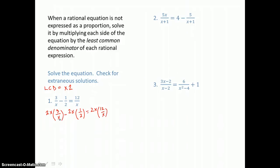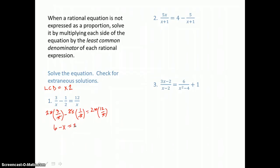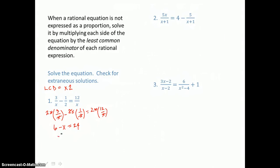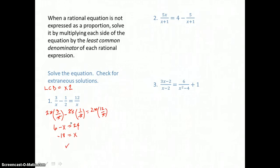Simplifying each term: I can cancel that factor of x top and bottom in the first term, so I'm left with 6. Then I can cancel the factor of 2 in the second term, leaving minus x. On the right, I cancel the factor of x top and bottom, leaving 24. Subtracting 24 from both sides and adding x to both sides, x equals negative 18. Checking by substituting negative 18 into the original equation, I don't get a denominator of 0, so this value checks.